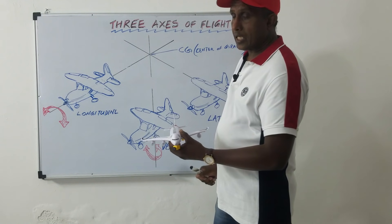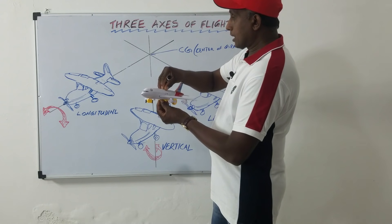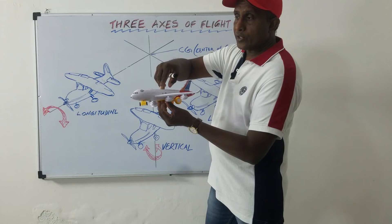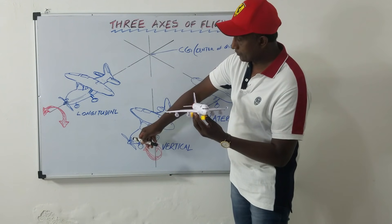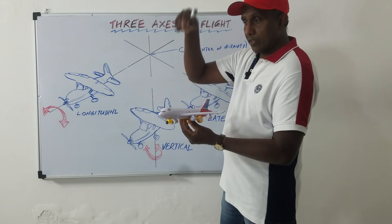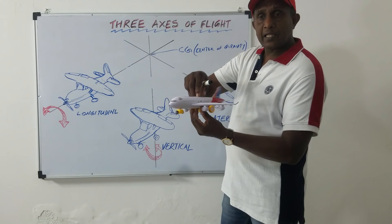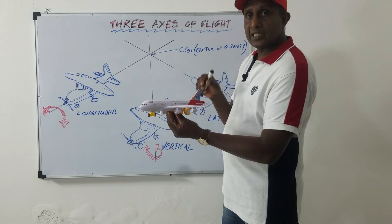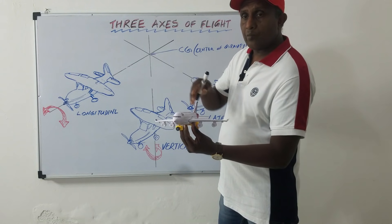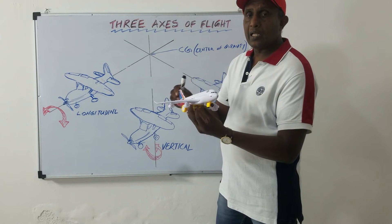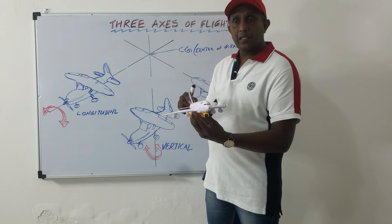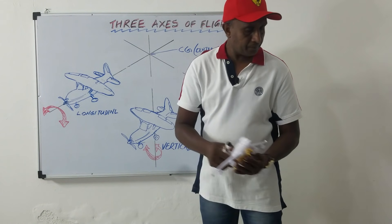The other axis is called the vertical axis. When pressure is applied to the rudder pedals, the rudder deflects into the airstream. This produces an aerodynamic force that rotates the airplane about its vertical axis. This is referred to as yawing. The rudder may be displaced either to the left or right of center depending on which rudder pedal is depressed. If the rudder moves left or right, the aircraft yaws in that direction. This yawing movement is controlled by the rudder.